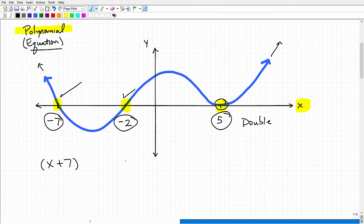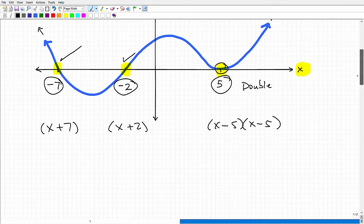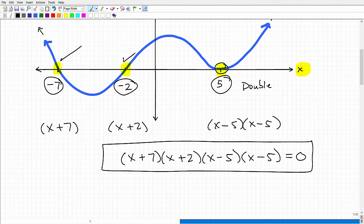So we can write these factors like this: x plus 7, this would be x plus 2, and then this would be x minus 5, and another x minus 5. Now, if I multiply all these together and set this equal to 0, let's go ahead and do that now. x plus 7 times x plus 2 times x minus 5 times another x minus 5. And I said this was equal to 0. And I asked you to solve this equation or graph it, you would set each one of these factors here equal to 0, because this whole thing is equal to 0.